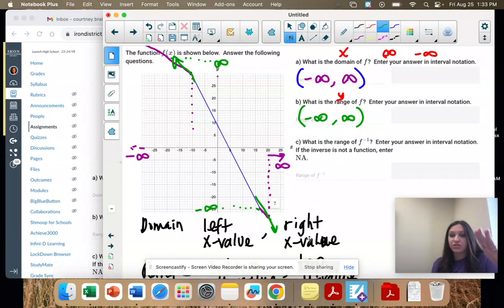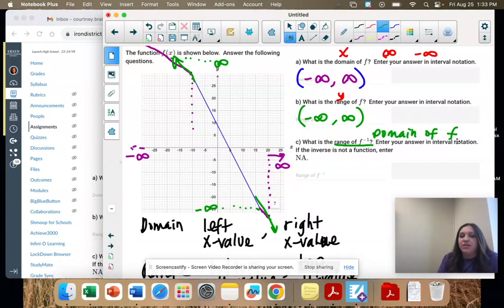Whenever you have just a straight line on a graph, both the domain and range are infinity. It goes up and down forever, left and right forever. So this is easy. Our range of the inverse is the domain of the original function, but they're both the same. So we're doing negative infinity to infinity.